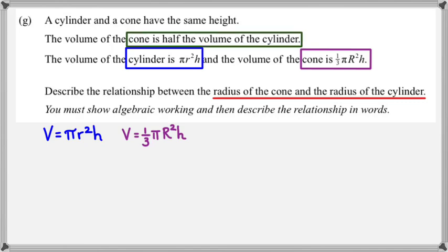And there's also one key information that is in the second line, which is the volume of the cone is half the volume of the cylinder. So with that in mind, we can say that half the volume of cylinder is equal to the volume of the cone. Now it's a matter of just substituting the volume of cylinder and volume of cone.